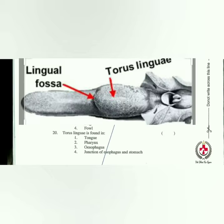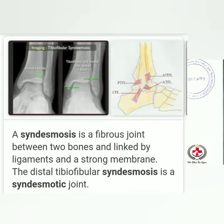The syrinx is found in fowl. The filter is present — the answer is horse. Torus linguae is found in cattle — let's move to short definitions.